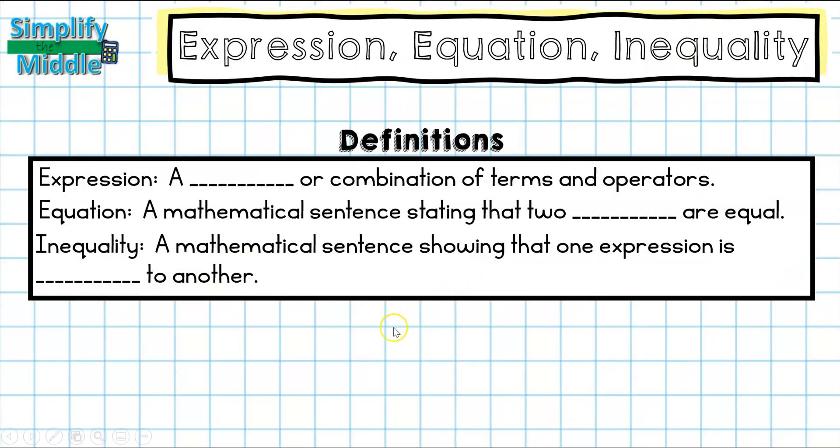An expression is a term or combination of terms and operators. Remember, expressions must have at least one operator. An equation is a mathematical sentence stating that two expressions are equal, and an inequality is a mathematical sentence showing that one expression is not equal to another.